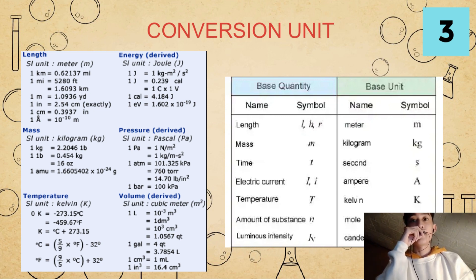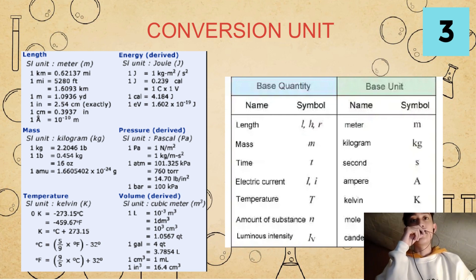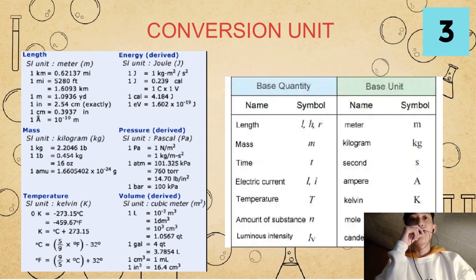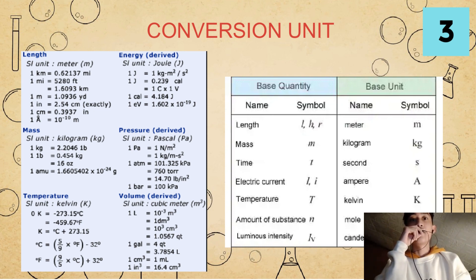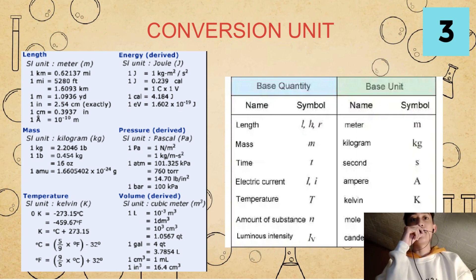For our mass, the SI unit is kilogram or kg. For every 1 kg, there are 2.20461 lb. For every 1 lb, it is equals to 0.0454 kilograms or 16 oz. For every 1 AMU, it is equals to 1.66540 times 10 raised to negative 24 grams.